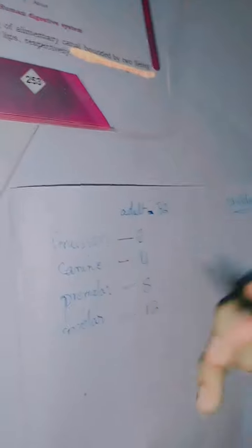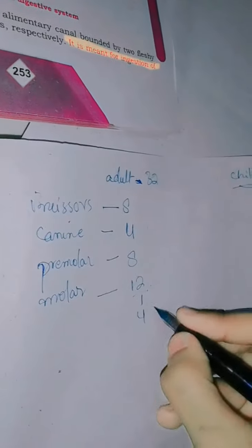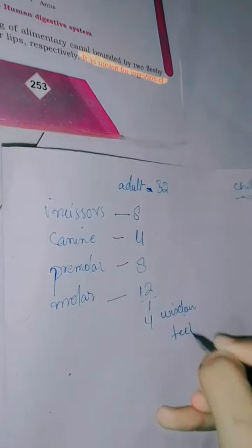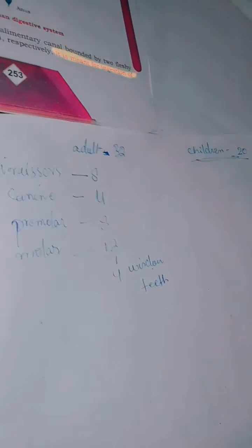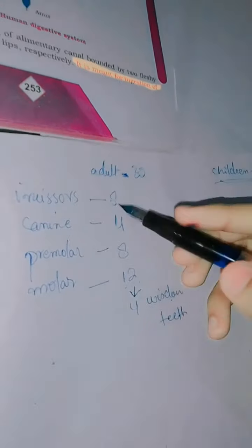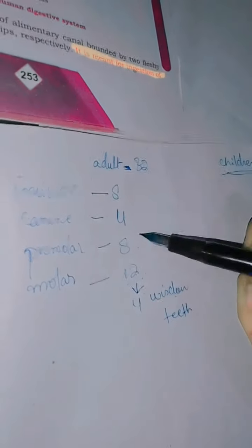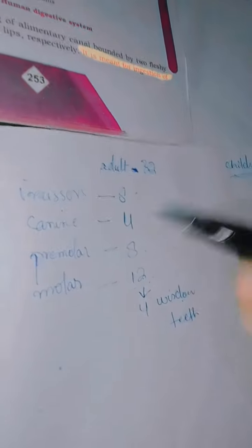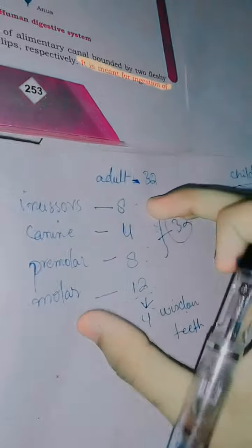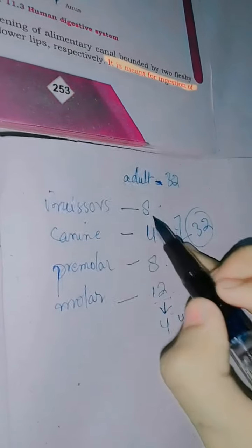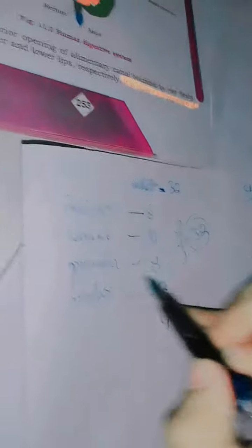To verify: incisors are 8, canines are 4, premolars are 8, and molars are 12. Adding them: 12 plus 8 is 20, plus 8 is 28, plus 4 is 32. So adults have 32 teeth total. Out of the 12 molars, 4 are wisdom teeth.